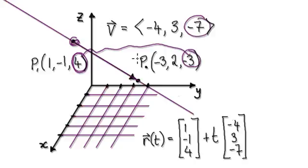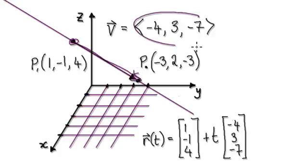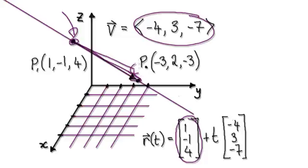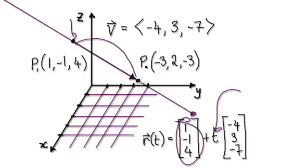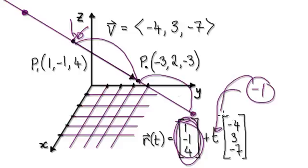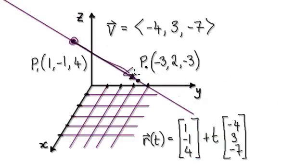So our vector from here to here would be negative 4, 3, and negative 7. So the equation of the line would be us starting from here, with vector negative 4, 3, negative 7. If you want to describe this point, you start here and insert t = 2. If you want to describe the other point, you start here and insert t = negative 1, which takes you in the opposite direction, because our vector is moving from here to here.